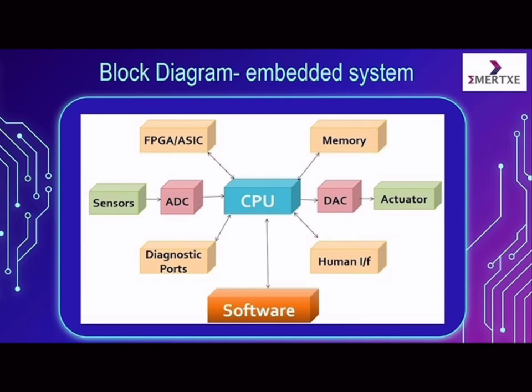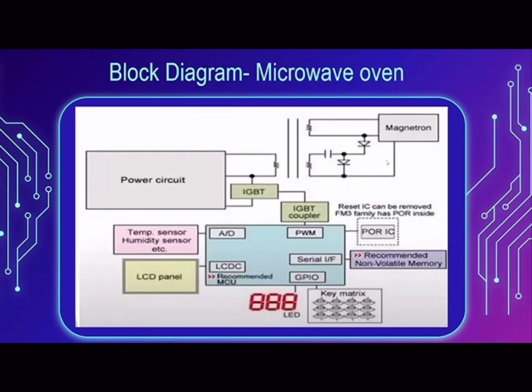The block diagram of an embedded system is shown in the image. A CPU is connected to ADC and DAC, which are connected further to sensors and actuators. The CPU also takes information from human interfaces, diagnostic ports, FPGA, ASIC, and memory. All of this is integrated with the use of software.